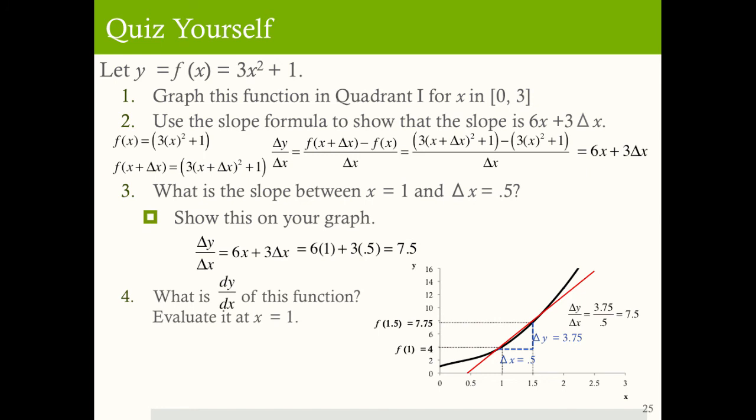The fourth question: what is dy/dx of this function evaluated at x equals 1? I'm not interested in the slope between 1 and 1.5 or 1 and 1.1 — I want the slope at exactly x equals 1. To find the derivative, I take the limit of the slope as Δx approaches 0, letting Δx approximately equal 0, and I get 6x. So the derivative of 3x squared plus 1 is 6x. Evaluated at x equals 1, that gives a more precise slope — the rate of change at x equals 1 is positive 6.